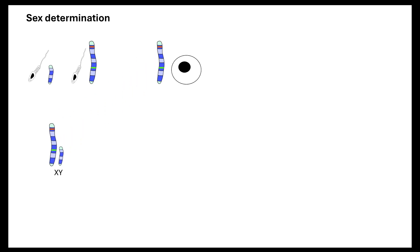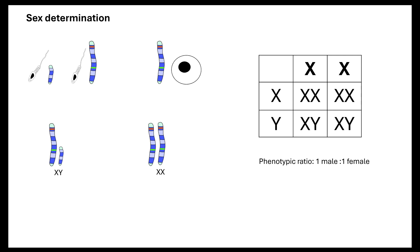It's the sperm cell carrying the Y chromosome fusing with the egg cell that produces a male XY offspring, or the sperm cell carrying the X chromosome fusing with the egg cell that gives XX offspring. The phenotypic ratio for sex determination is one-to-one: a 50% chance of a male offspring and a 50% chance of a female offspring, determined by which sperm fertilises the egg.